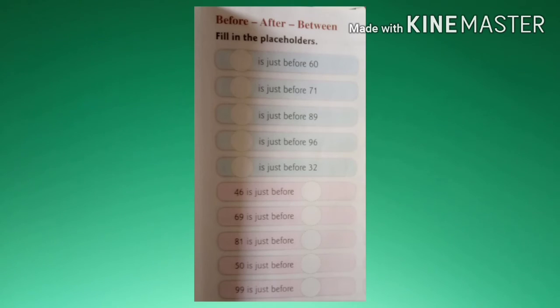So, the next one. Before, after, between. That means fill in the placeholders. 59 is just before 60. Likewise, 70 is just before 71. You fill up at home.